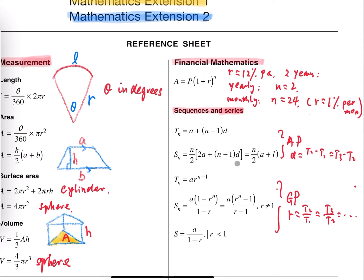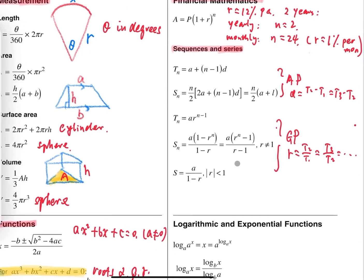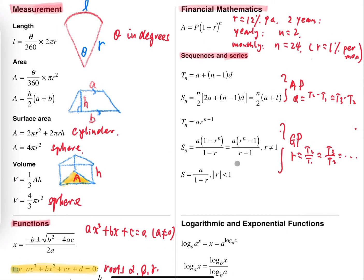The GP has one extra formula called the limiting sum. The limiting sum has a condition: the common ratio must be less than one in absolute value, meaning R is between negative one and one. When that condition is met, the limiting sum formula is A over (1 minus R).